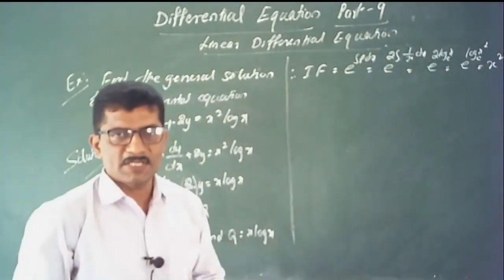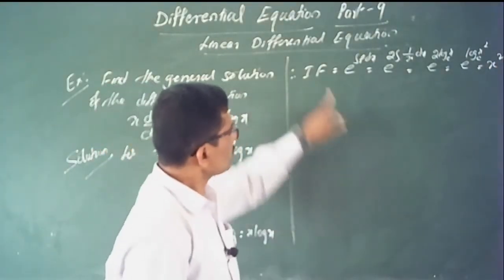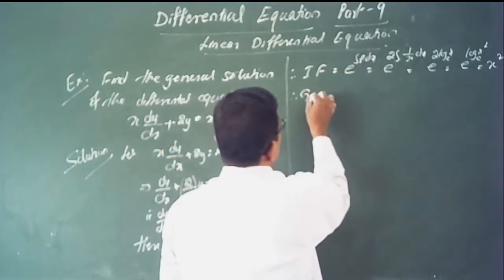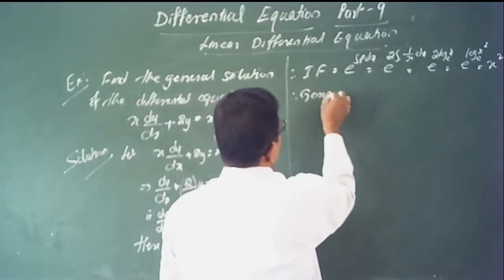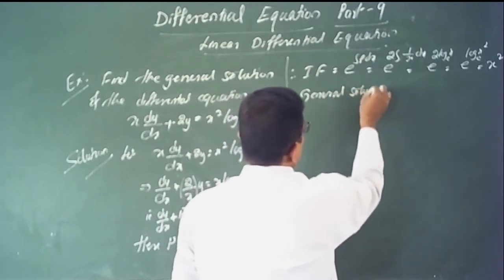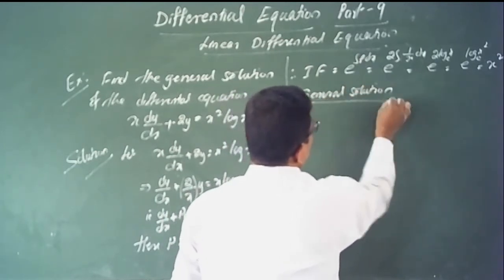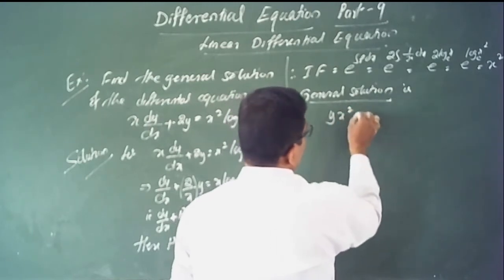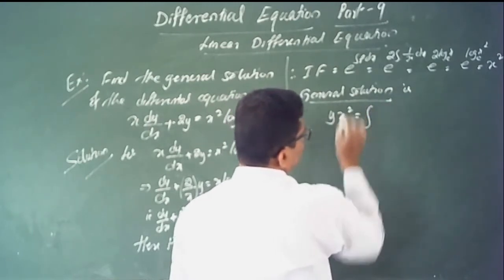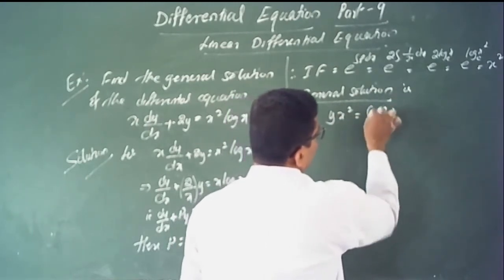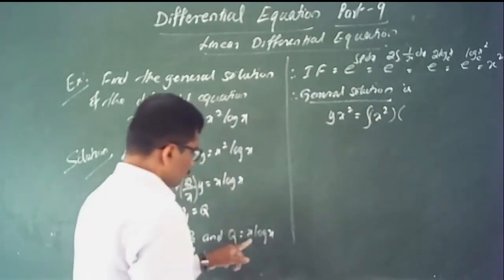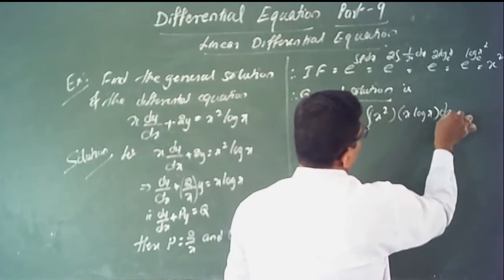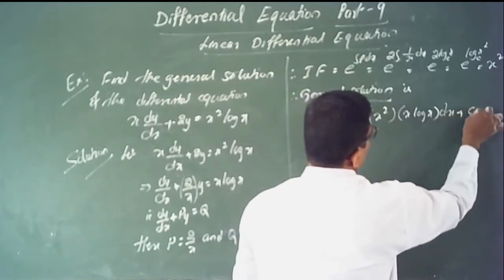Since the base is the same, the integrating factor equals x squared. This is a very important step. The general solution of the differential equation is y times x squared equals the integral of x squared times q, where q is x times log x, dx plus constant.